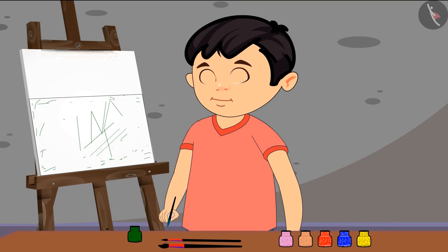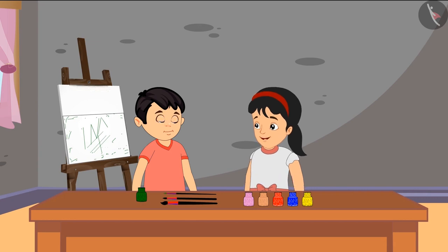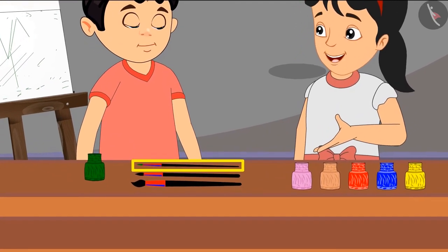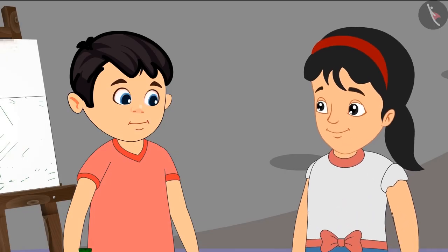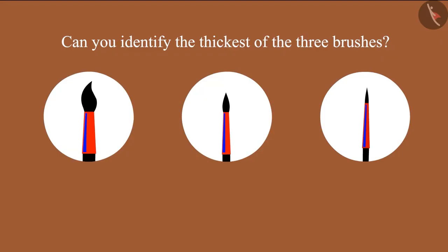Chotto is taking a lot of time to cover the green field. Oh Chotto, your brush is very thin — it will take a lot of time to color the field with such a thin brush. So what should I do, Pinky? Chotto, if you take the thickest brush then you'll be able to paint the entire field very quickly. Okay, all right Pinky, but which of these is the thickest brush?